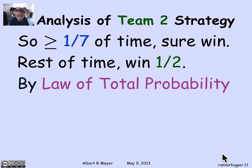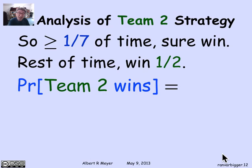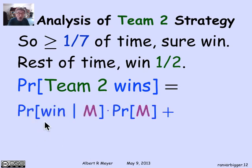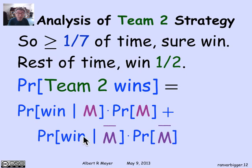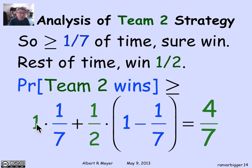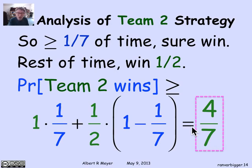Now we apply total probability. The probability team two wins equals: the probability they win given case M times the probability of M, plus the probability they win given not case M times the probability of not M. We found that you win with probability 1 a seventh of the time, and with probability one half the other six-sevenths of the time. That gives 1 times 1/7 plus 1/2 times 6/7, which equals 4/7. Team two wins with probability 4/7 — better than 50-50. They have an advantage.